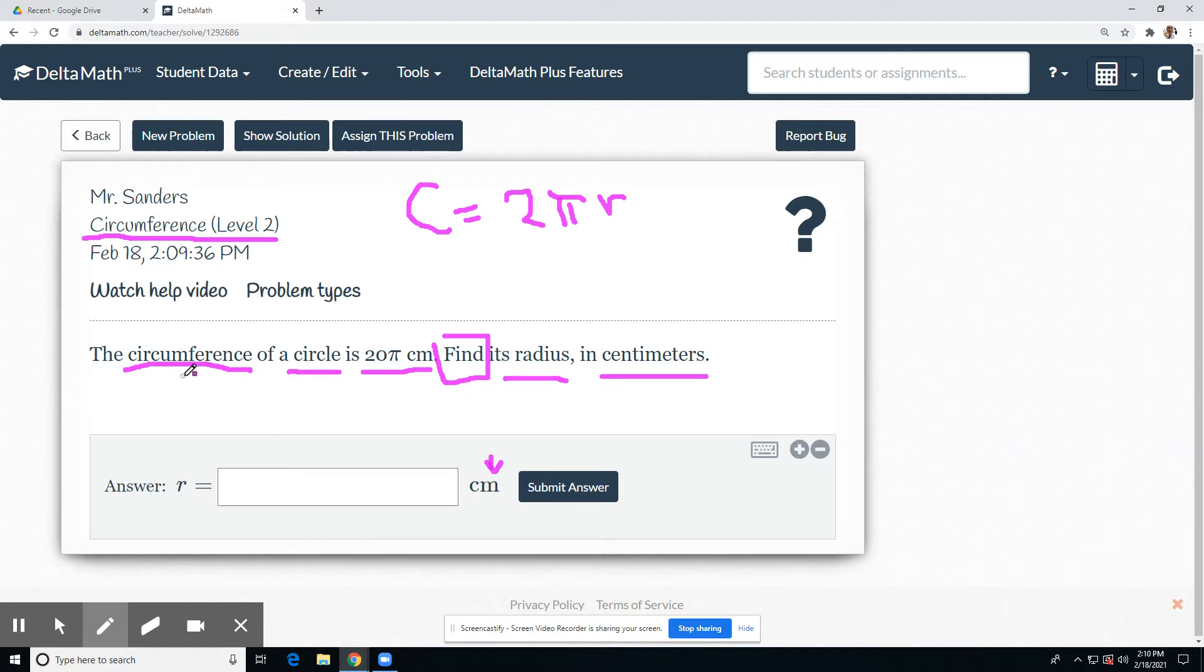The circumference is 20, so that means we replace C with 20, sorry, 20 pi, and then we're solving for r.